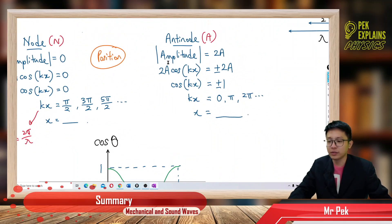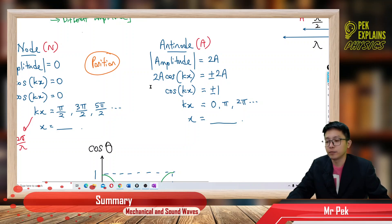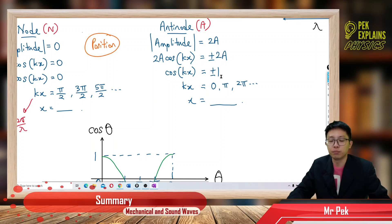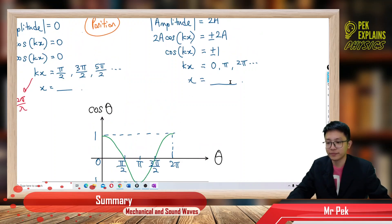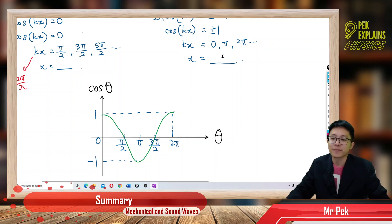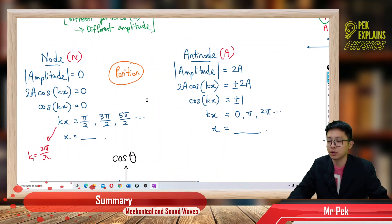For the antinodes, the amplitude is 2A. Using the modulus, cos kx equals positive or negative 1. Cos theta equals 1 when theta is 0 and also when theta equals 2π; cos theta equals negative 1 when theta equals π. So the sequence is 0, π, 2π, 3π, 4π, 5π. Divide by k to get x — the position of the antinode. That's how you get the position of node and antinode.